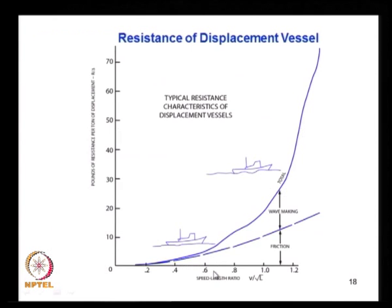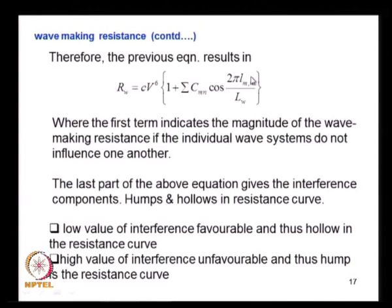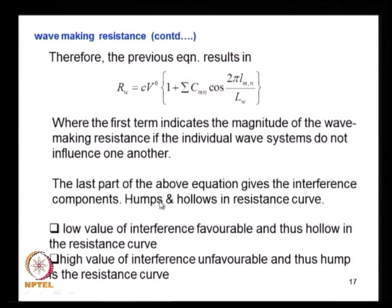There are humps and hollows in the resistance curve. A hump occurs when the waves interfere constructively — the four waves interfere constructively, causing the interference term to add to resistance. When the interference term becomes negative due to out-of-phase components, resistance dips — that is a hollow. Low values of interference are favorable, creating hollows in the resistance curve. The humps and hollows depend on the ship's speed and the phase difference between components.